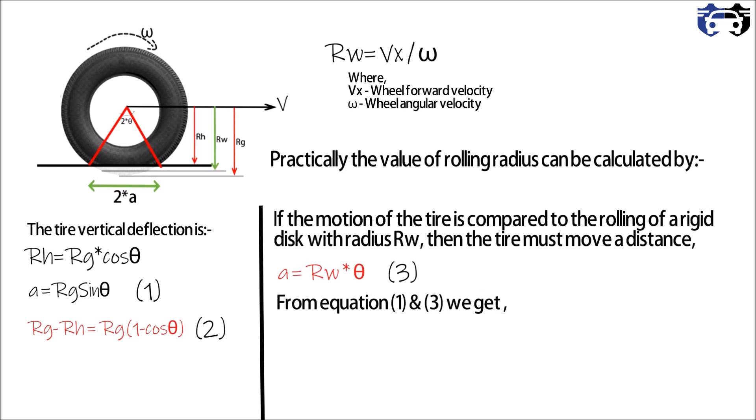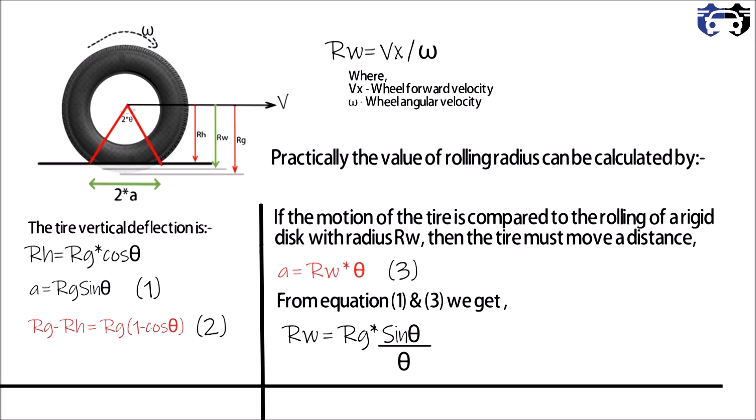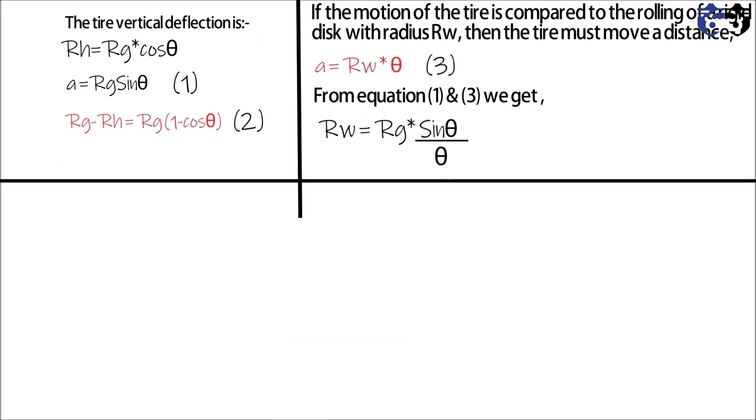So a equals to Rw multiply by theta. From equation one and three we get Rw equals to Rg multiply by sin theta by theta. So here we get the value of rolling radius in terms of Rg and theta.